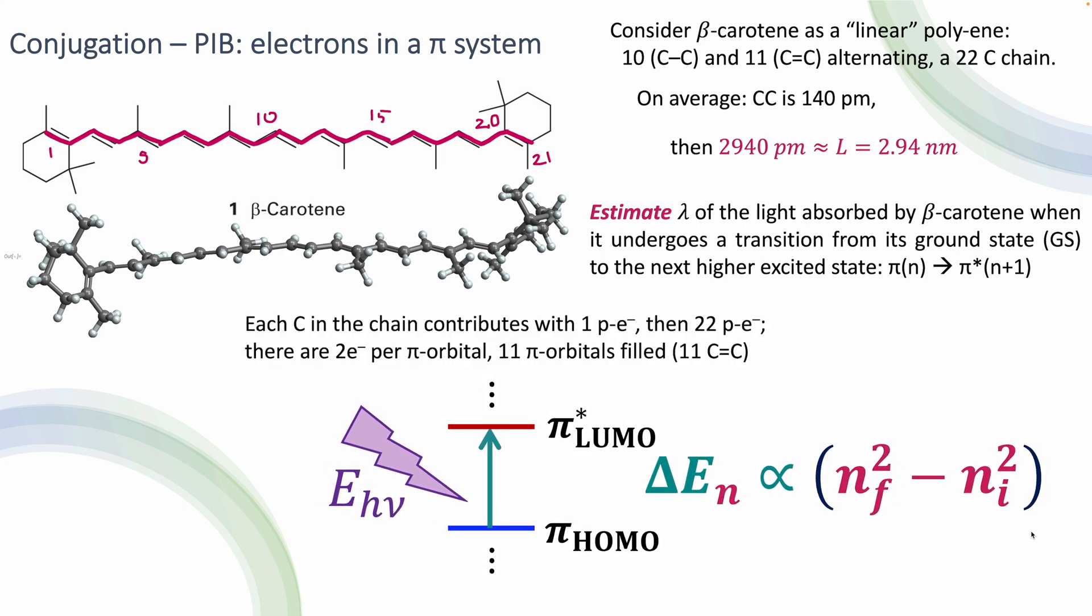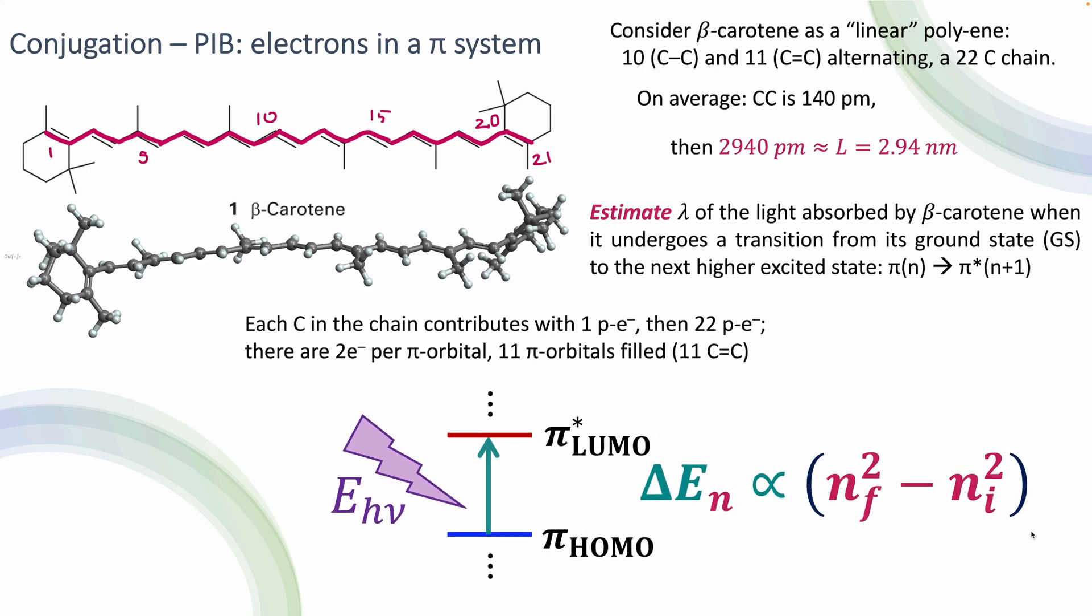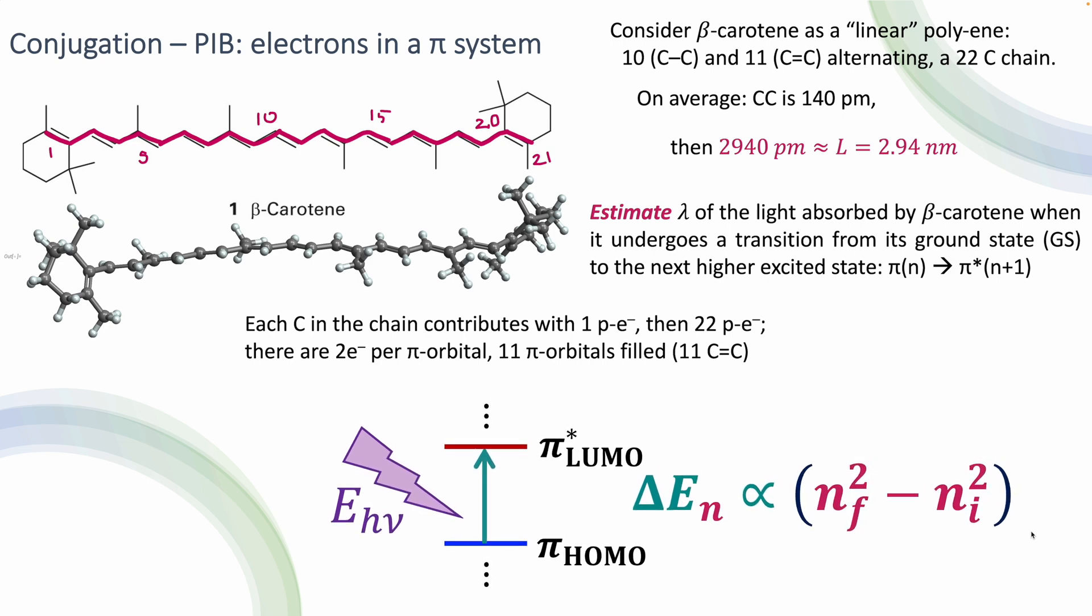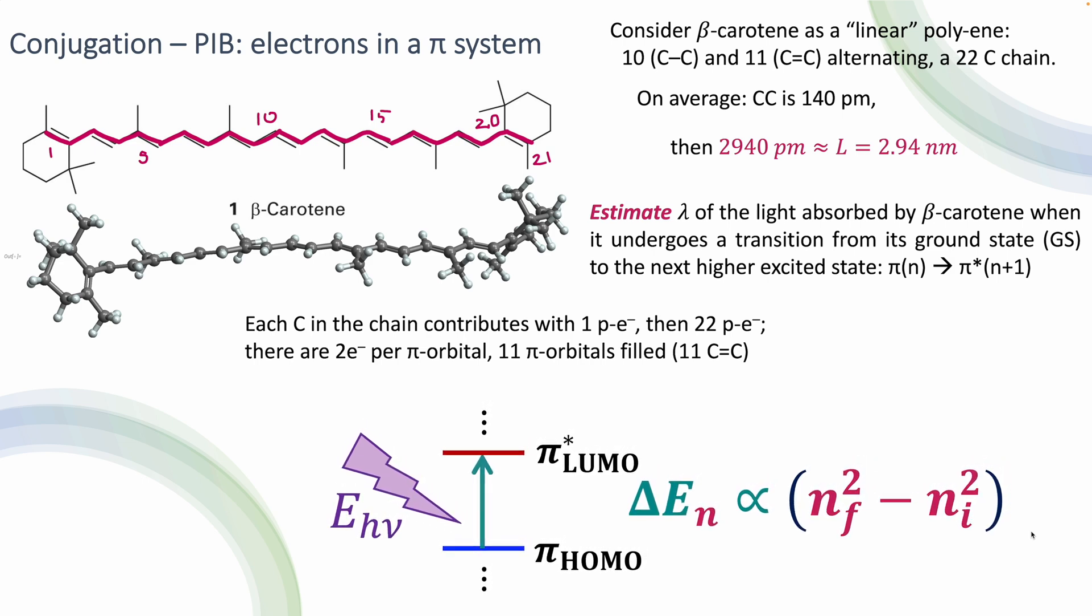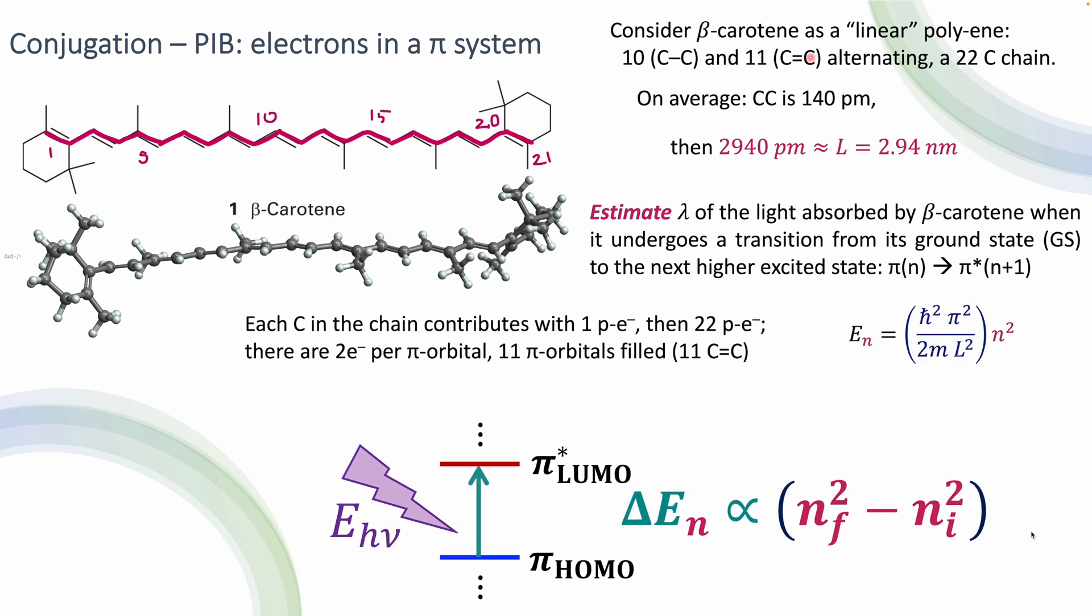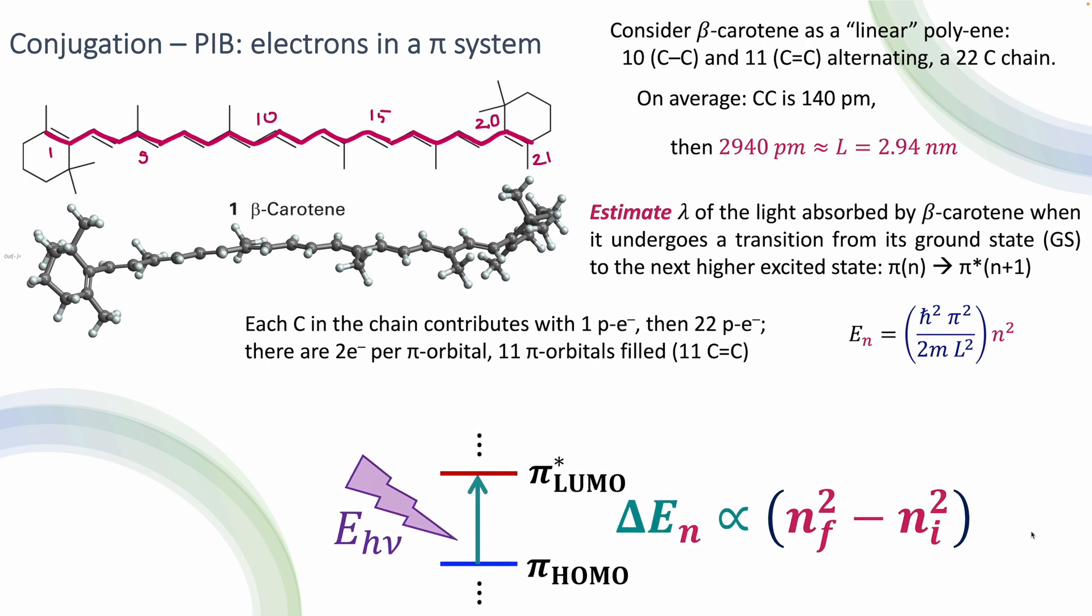So each carbon in the chain contributes with one p electron, then you have 22 p electrons, there are two of those electrons per pi orbital, so we have 11 pi orbitals that are going to be filled, and those are the 11 carbon double bond carbons. With that, remember, this is another equation that we have, and this is just a different way to put it, because here I'm using h-bar instead of H, as in the previous example, but the results should be exactly the same.